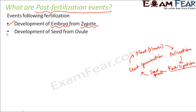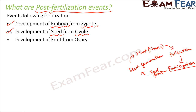The zygote then undergoes repeated divisions to form the embryo. So development of the embryo from the zygote is one post-fertilization event. The next one is the ovule getting developed into a seed. The third is the development of the fruit from the ovary. These are the three major post-fertilization events.